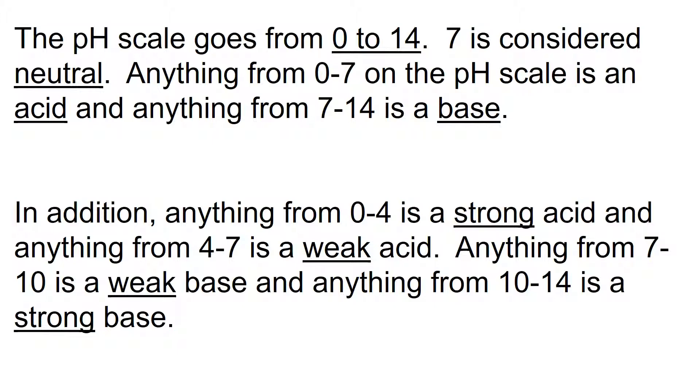The pH scale goes from 0 to 14. 7 is considered neutral. Water is a neutral compound. Anything from 0 to 7 on the pH scale is an acid, and anything over 7, from 7 to 14, is considered a base. Anything from 0 to 4 is usually a strong acid, and anything from 4 to 7, closer to neutral, is a weak acid. On the other side of the scale, anything from 7 to 10 is a weak base, and anything greater than 10, 10 to 14, would be a strong base.